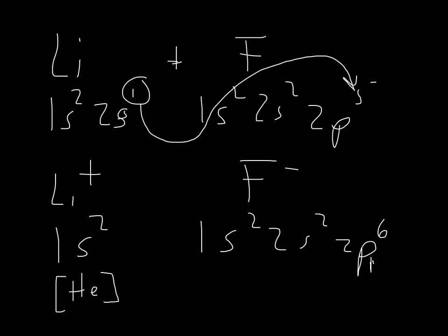So by gaining electrons, the fluoride gets a noble gas configuration, and by losing electrons, the lithium gets a noble gas configuration. They both end up with configurations that are equivalent to that of a noble gas, and we say that with the word isoelectronic.